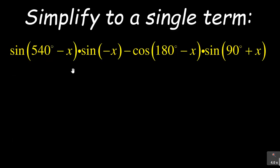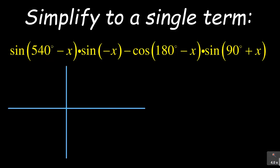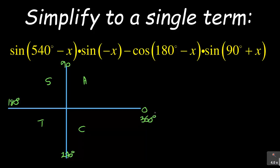Whenever I'm given a part where I need to reduce, I have to use the CAST diagram because it is my go-to diagram when dealing with reduction rules. Let me quickly put it down. This is my CAST diagram. Remember, it goes: All Students Take Chemistry. I've got zero degrees, 90 degrees, 180 degrees, 270 degrees, and a complete cycle is 360 degrees.